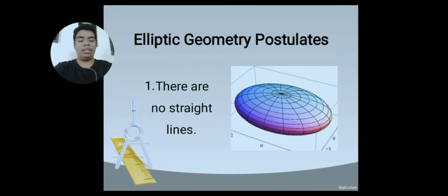First postulate is there are no straight lines. Any line that is drawn on a curved surface will always be curved because the surface itself is curved. Since ellipse is more likely a flattened circle, and we all know that a circle is composed of curved lines, therefore the ellipse is also composed of curved lines. There are no straight lines we can see in an ellipse.